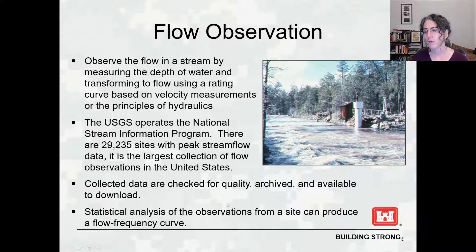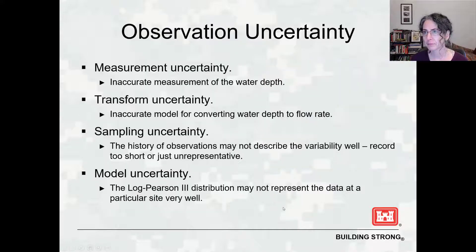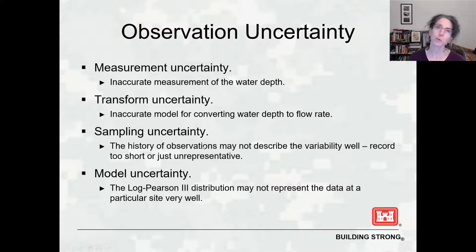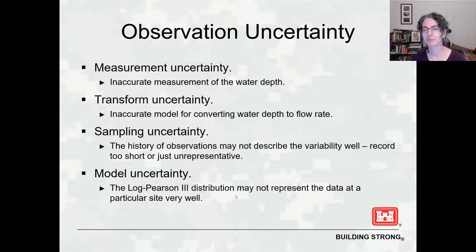Statistical analysis of annual peak stream flow observations from a site can be used to produce a flow frequency curve. There are several types of uncertainty in this type of analysis. We have measurement uncertainty — inaccurate measurement of stream stage. We have transform uncertainty — the flow-stage rating curve for transforming stage into flow rate may not be quite right. We have sampling uncertainty — the history of observations may not describe the variability of stream flow well; the record may be too short or unrepresentative. And we have model uncertainty — maybe the log Pearson type 3 distribution is not the best fit for that particular site.